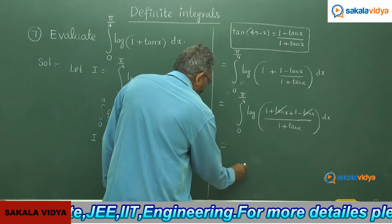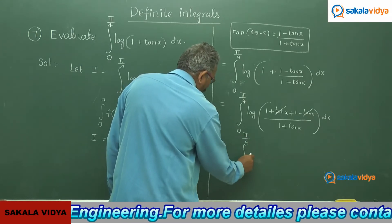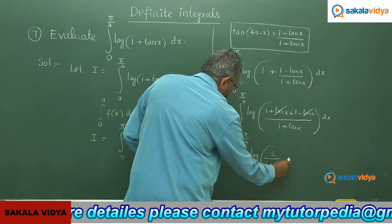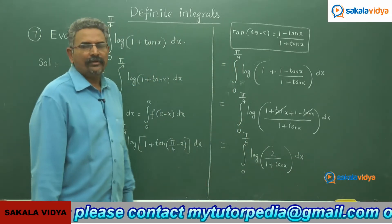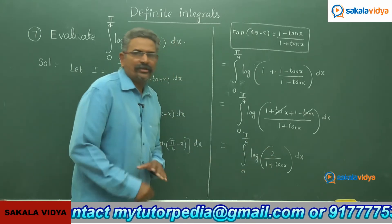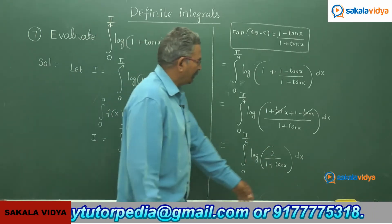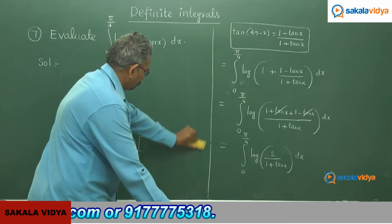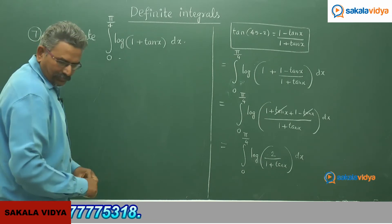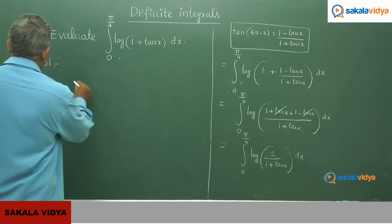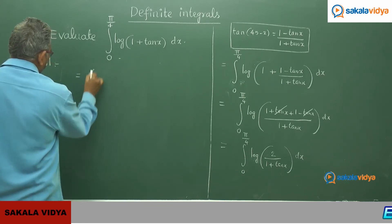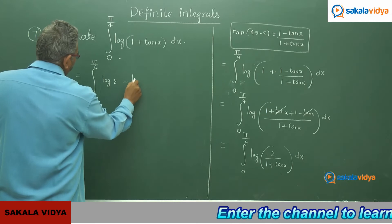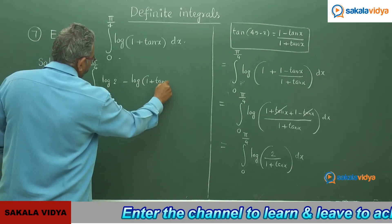We have integral 0 to pi by 4 of log(2 / (1 plus tan x)) dx. Now we apply the log quotient formula: log(x/y) = log x minus log y. So this can be written as integral 0 to pi by 4 of (log 2 minus log(1 plus tan x)) dx.